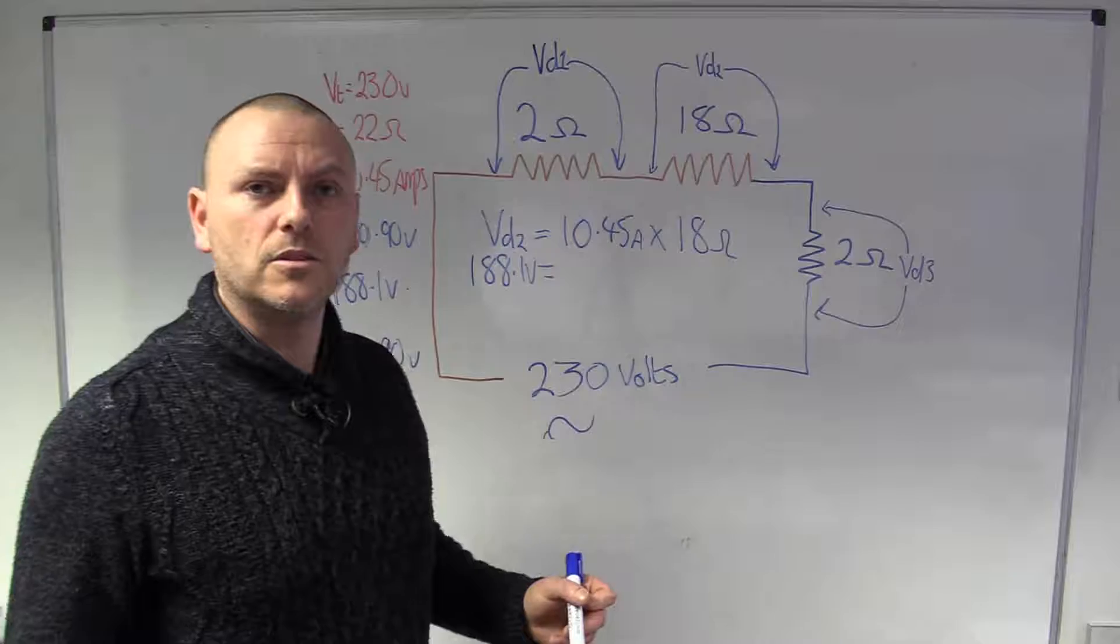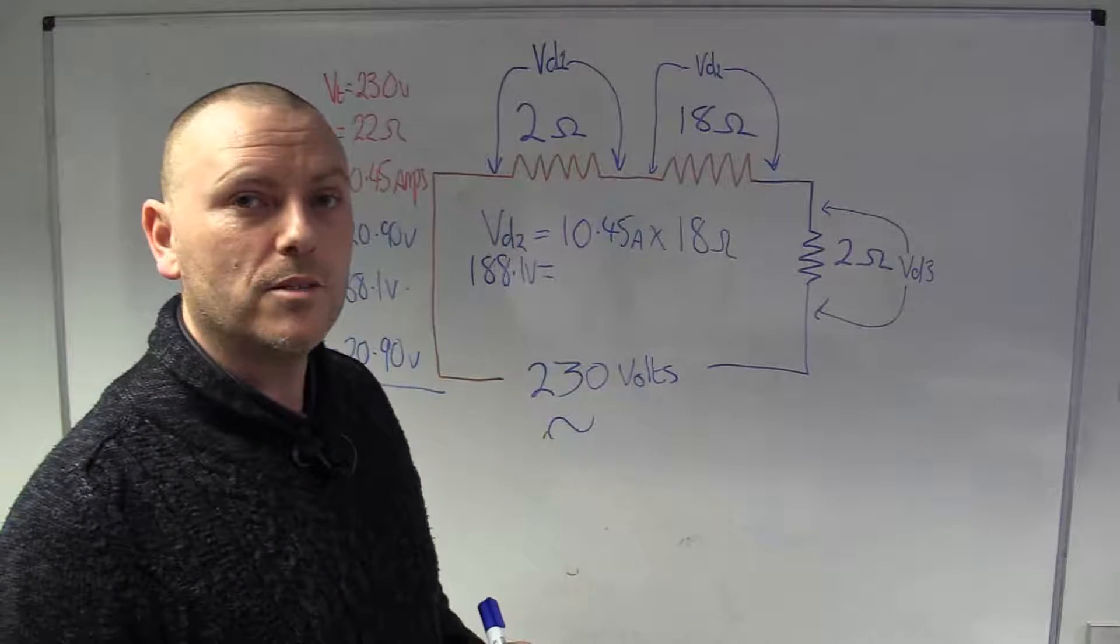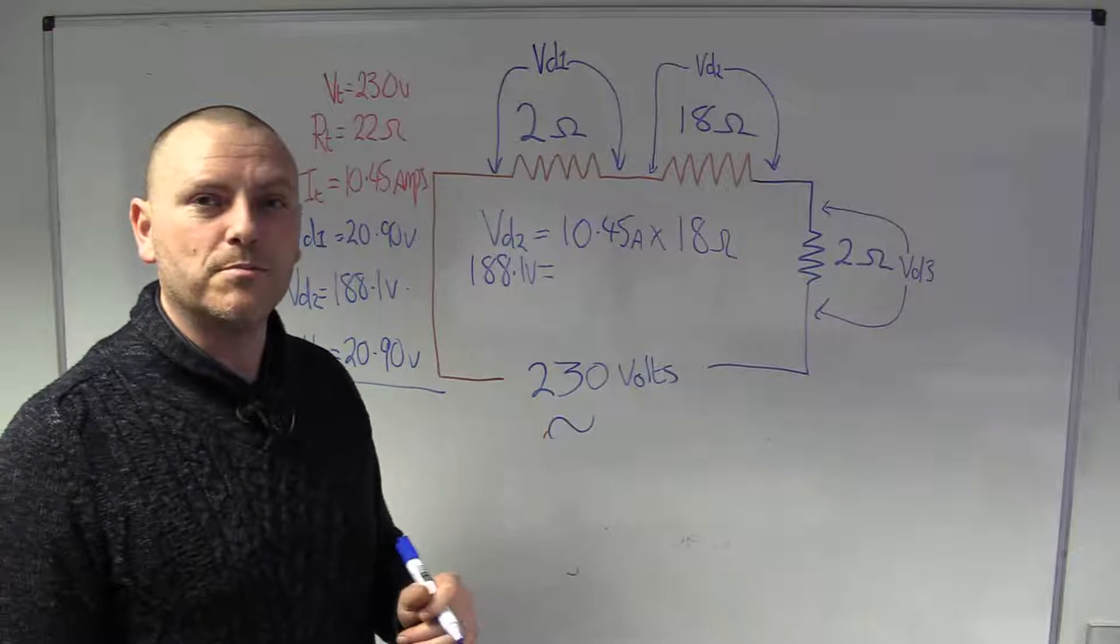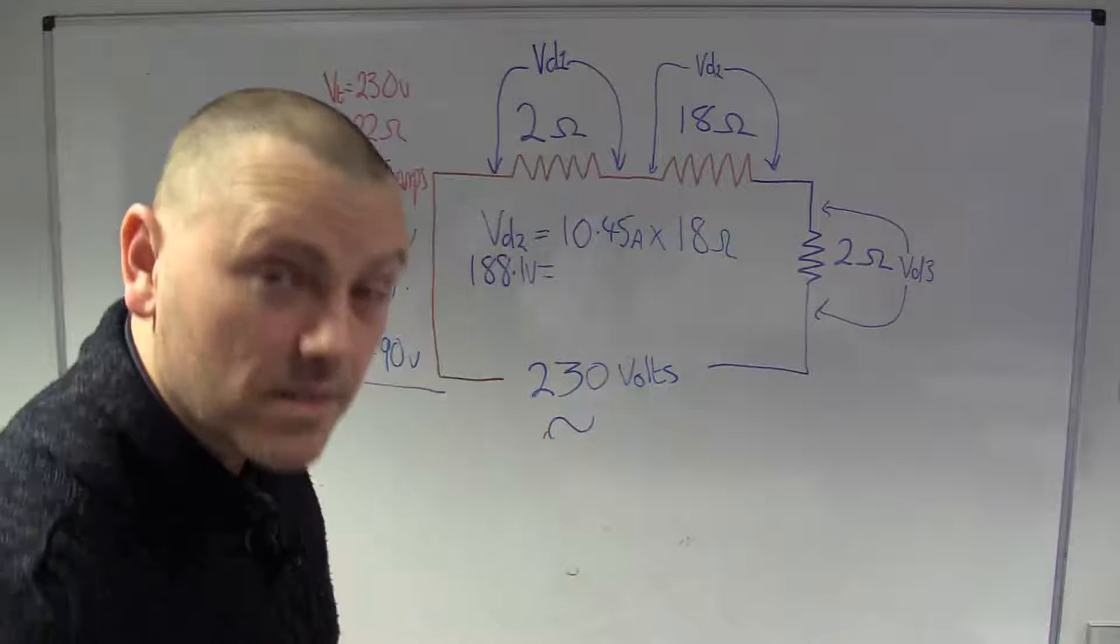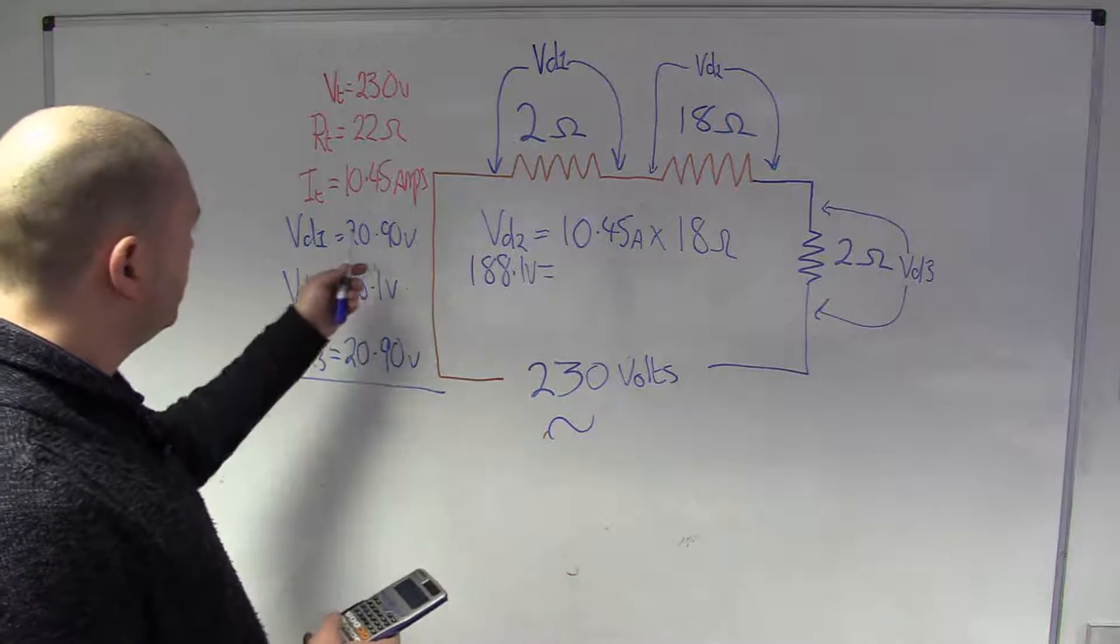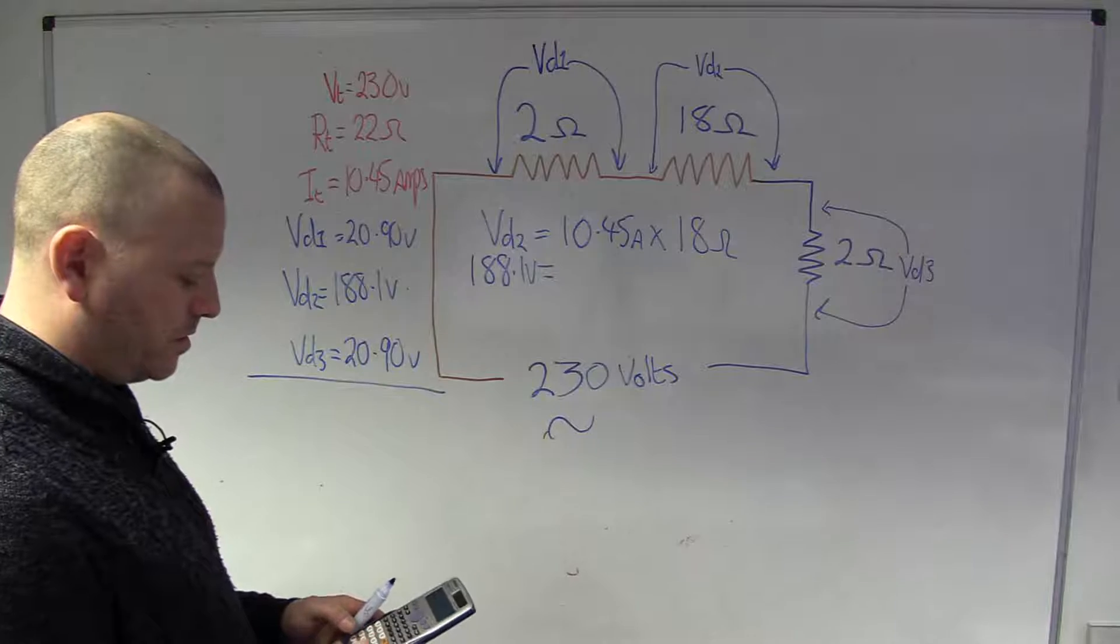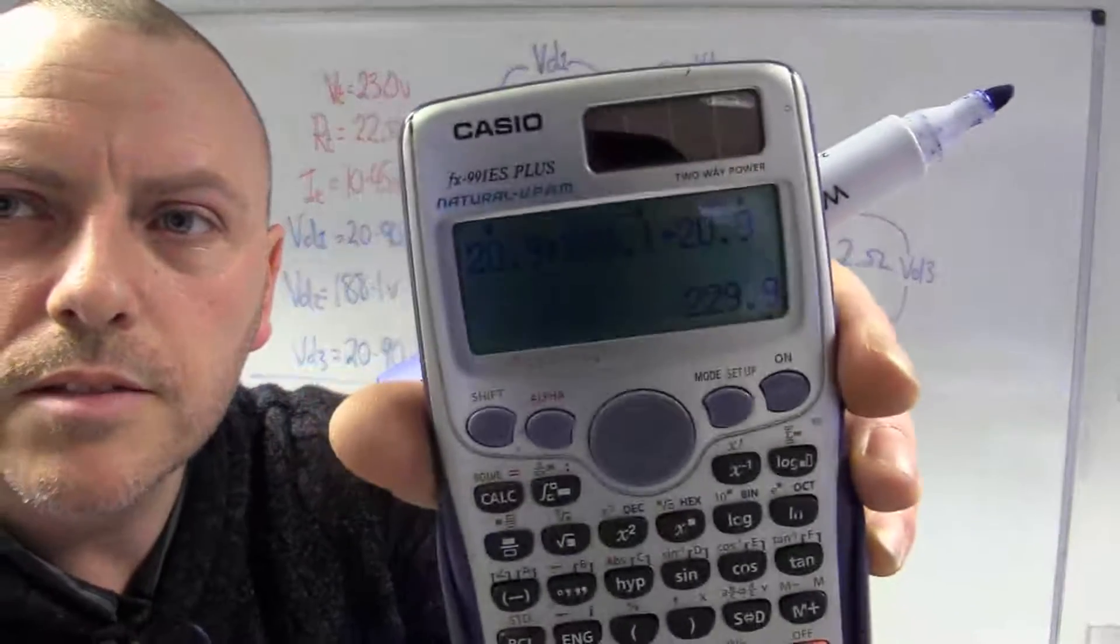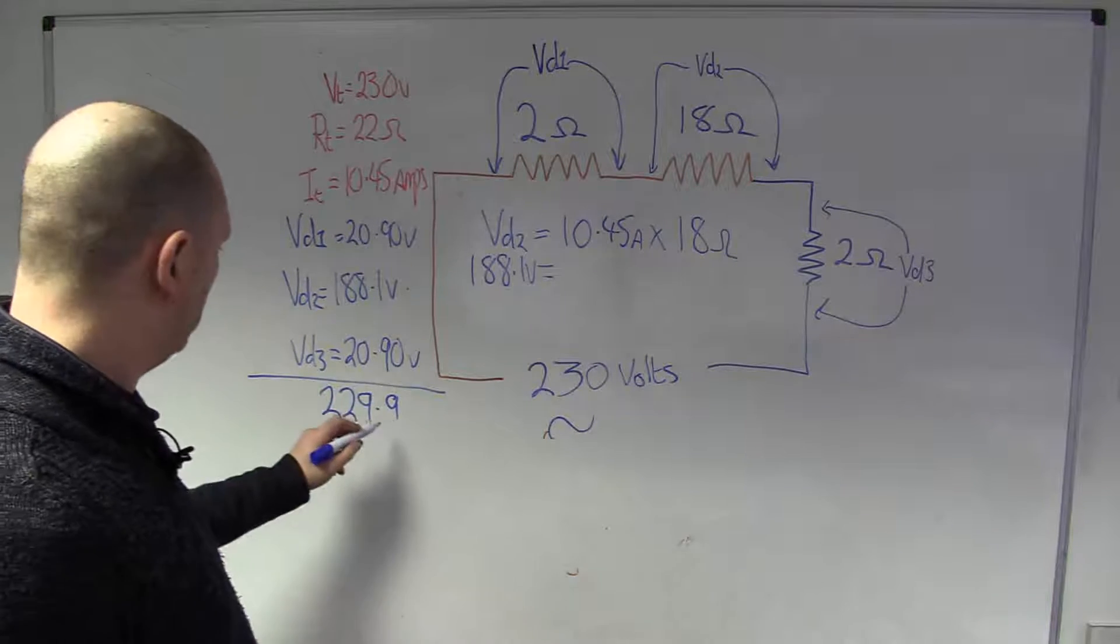Now, there was a man called Mr. Kirchhoff and he said that the volt drops in the circuit will add up to the supply voltage and this is a handy little check that we can do when we're doing these kind of analysis just to make sure we haven't made an error somewhere. So, if we sum these up and it comes to around that then we've done something right. If it doesn't we probably want to check our calculations again. So, we've got 20.9 plus 188.1 plus 20.9 and wouldn't you know it it comes to 229.9 volts. Now, where's the other 0.01 gone?